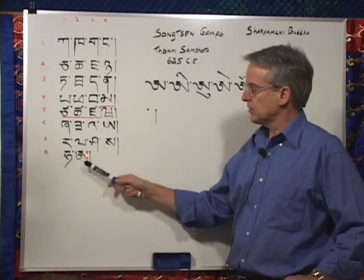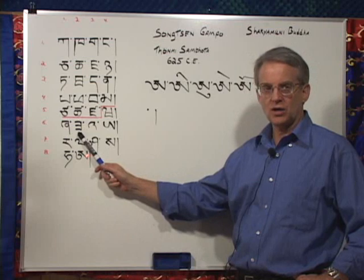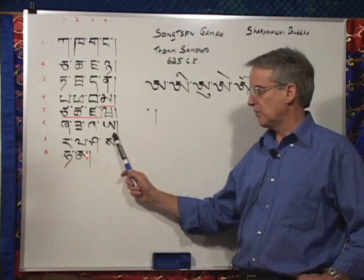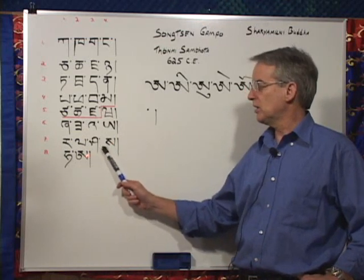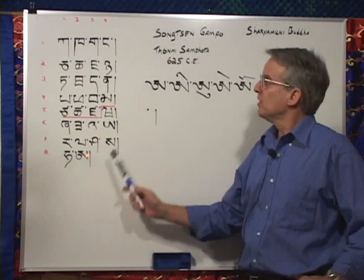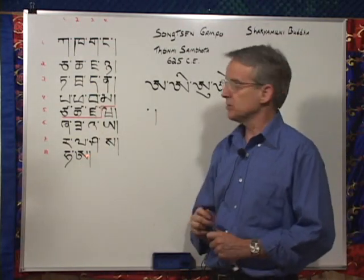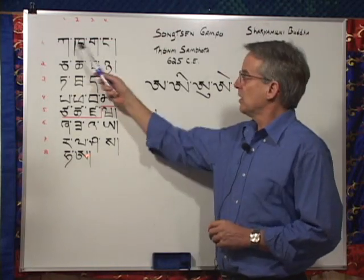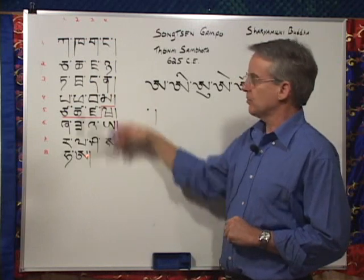So the sixth, seventh, and eighth rows would be: ja, za, ah, ya, ra, la, sha, sa, ha, ah. Tibetan is read left to right and top to bottom, just like English. So it's very good to memorize the alphabet, ka through ah, the thirty consonants.